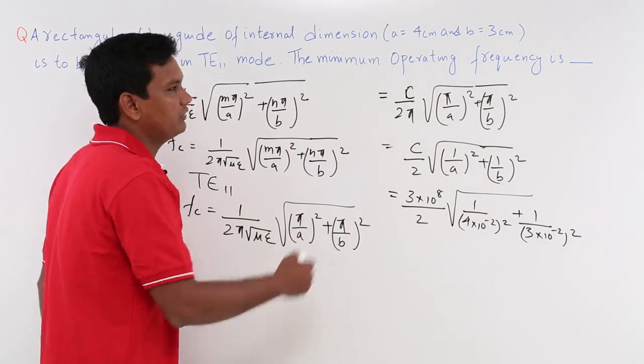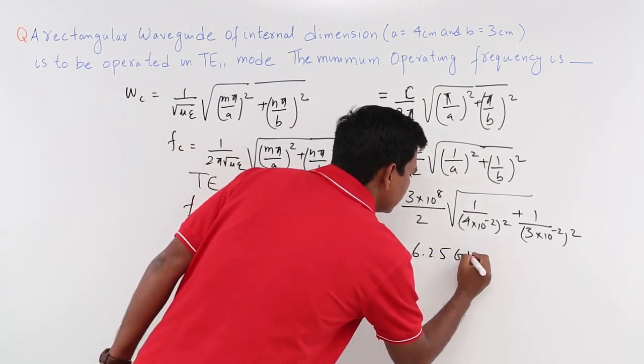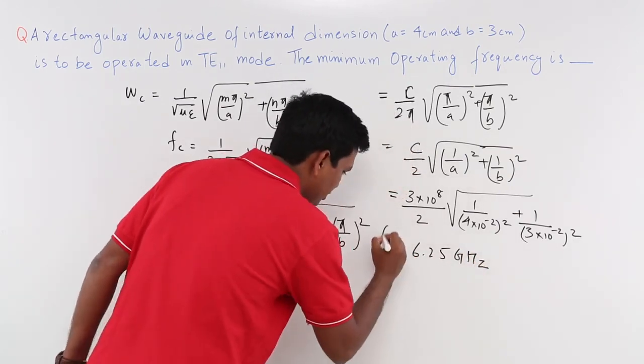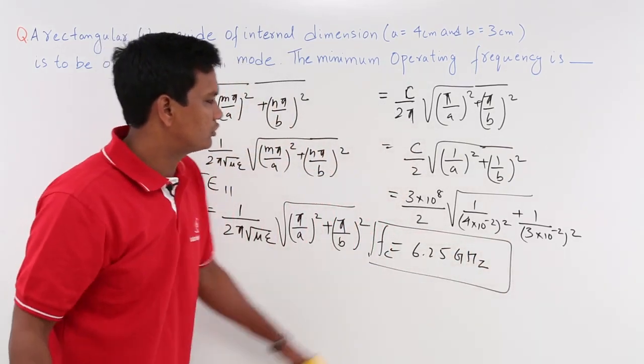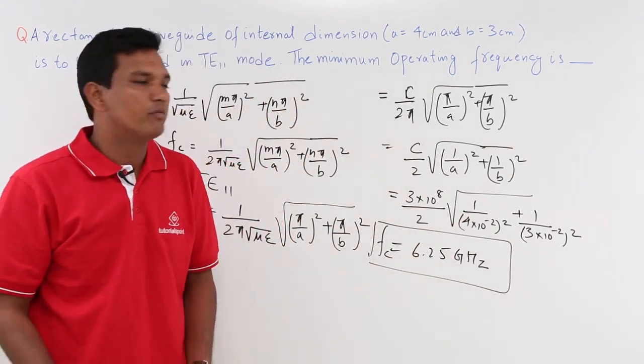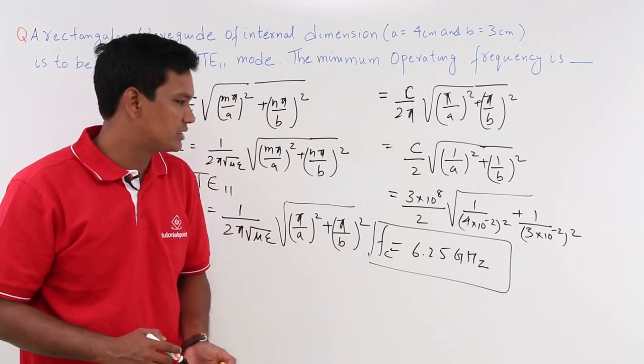When you solve this, after solving this what you will get is 6.25 Gigahertz. So this is your cutoff frequency. We have already found the minimum operating frequency which is your cutoff frequency which comes out to be 6.25 Gigahertz.